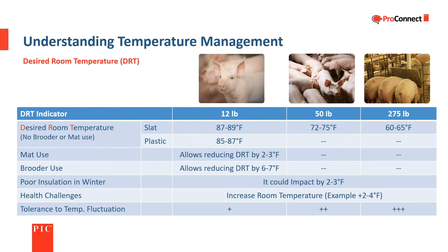Different weight pigs need different temperatures to be comfortable. The desired room temperature depends on the weight of the pigs, type of building and flooring, health status, and with recently weaned piglets, the tools used to create a comfort zone. Barns with concrete slats need to be warmer than ones with plastic flooring. A solid rubber or plastic mat with 0.4 square feet per pig allows the desired room temperature to be 2 to 3 degrees Fahrenheit cooler. By adding a brooder, the desired room temperature can be lowered an additional 6 to 7 degrees Fahrenheit.